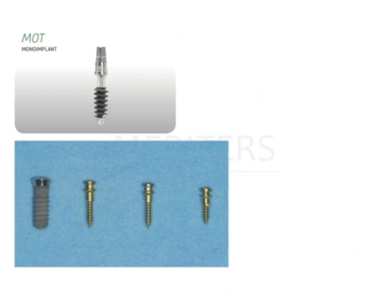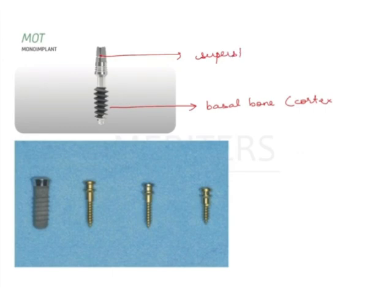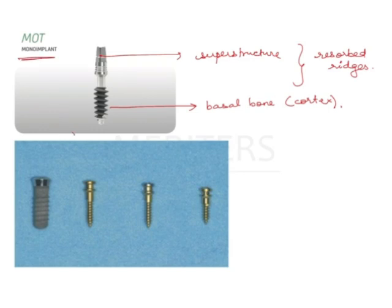Looking more closely at option one — the mono implant or cortical implant — this is the thread that goes into the basal bone or cortex, and this part supports the superstructure or crown. In highly resorbed cases where alveolar bone is deficient, you can use cortical implants, also known as mono implants. The commercially available company is Mono Implant.